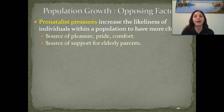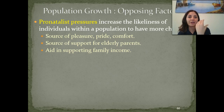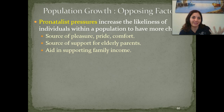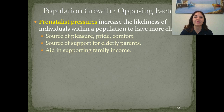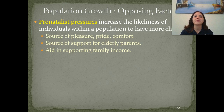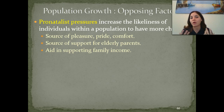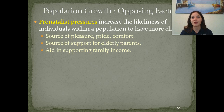In population growth, we have opposing factors as well as factors that encourage it. Pro-natalist pressure increases the likelihood of individuals within a population having more children. One reason is it's a source of pleasure and privilege to have a child. You're very prideful having a child, and it helps you feel comfortable knowing someone will take care of you when you get older. People want children to aid in supporting family income — back when farming was common, more children meant more hands to help. This also counteracts high child mortality rates.